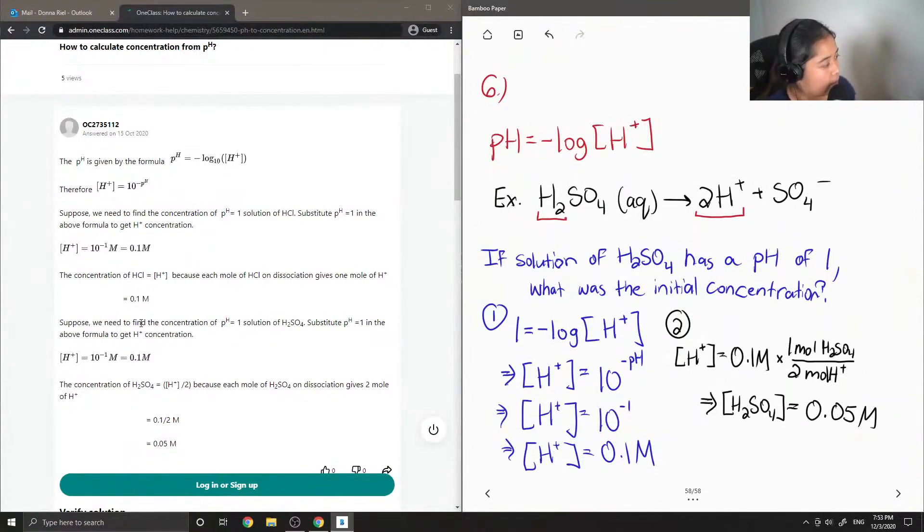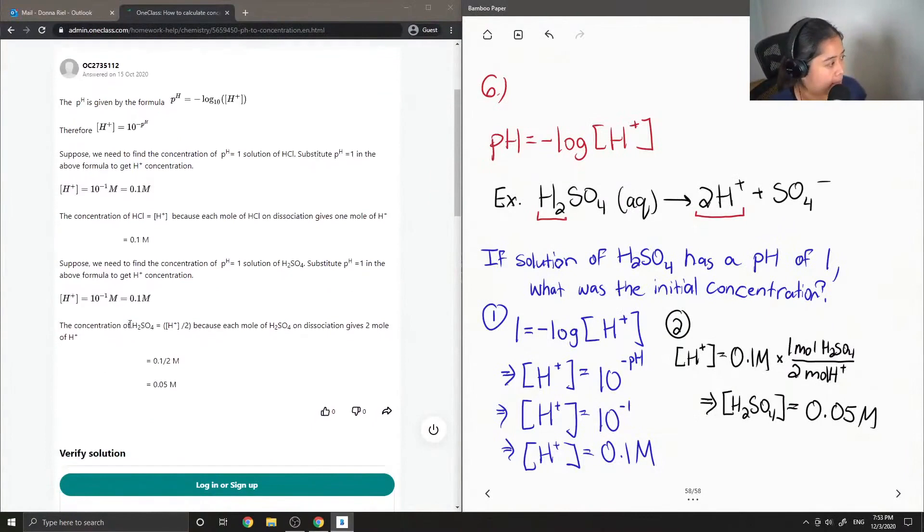They got that, and then the concentration of HCl is equal to the concentration of H+, because each mole of HCl on dissociation gives 1 mole of H+.